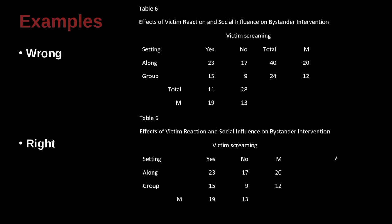Let's look at a couple more examples here. So in this one, table six, effects of victim reaction and social influence on bystander intervention. So we have the victim screaming. So we have the column, yes, the victim screamed. No, the victim did not scream. And then over here we have a total. What's this total? Hmm, that's interesting.